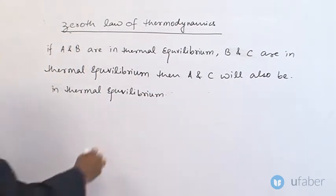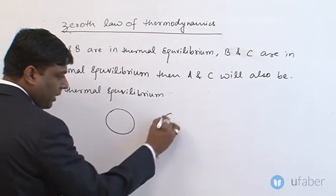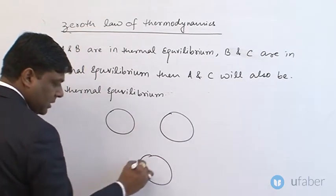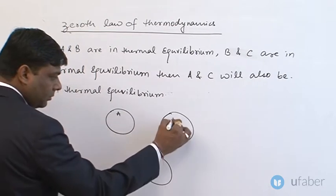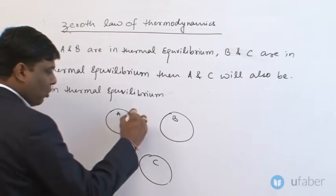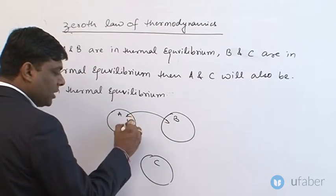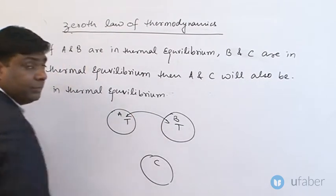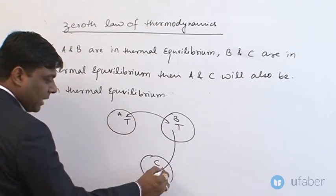What are we saying? A, B, and C are three objects. A and B are in thermal equilibrium. A and C are in thermal equilibrium.